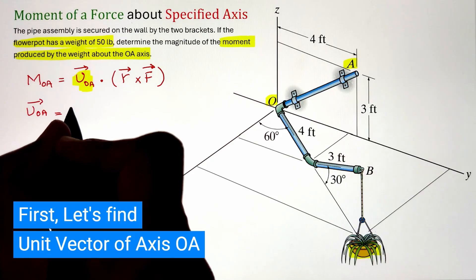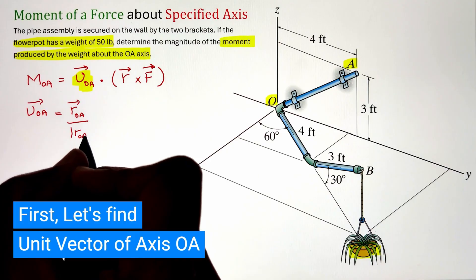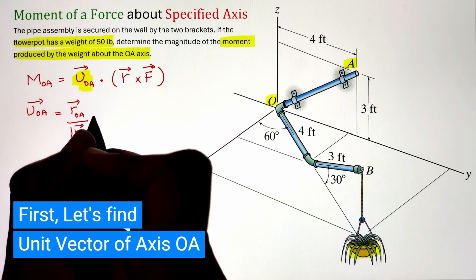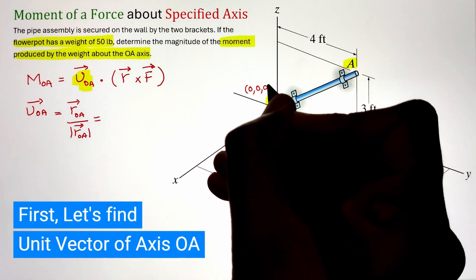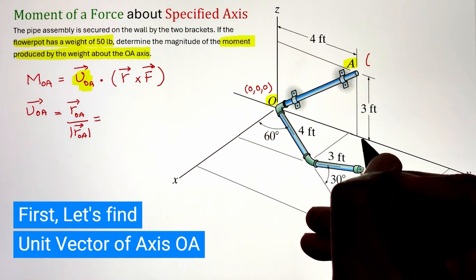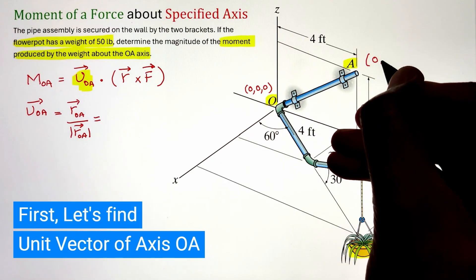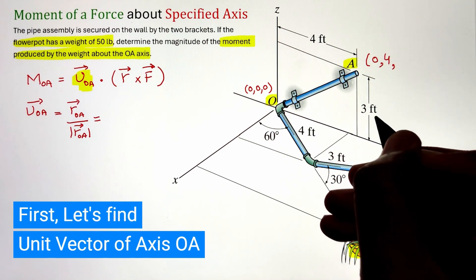So let's first figure out the unit vector of axis OA which can be calculated by taking the ratio of position vector OA divided by its magnitude. To calculate the position vector we have to identify the point coordinates. Since point O lies on the origin its point coordinate will be 0, 0, 0 whereas point A lies on the ZY plane.